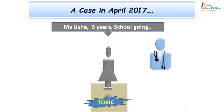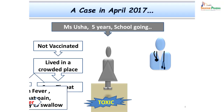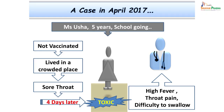Let us take an example of a case we had in April 2017. This was a school-going child, 5-year-old Miss Usha. She was brought to the hospital in a toxic state. She was not properly vaccinated — some doses were missed. She lived in a crowded place and was a malnourished child. The episode started with a sore throat, and a few days later she developed toxemia. She had high-grade fever, severe throat pain, and was unable to swallow even a sip of water. About a few hours before being brought to the hospital, she also had difficulty in breathing.